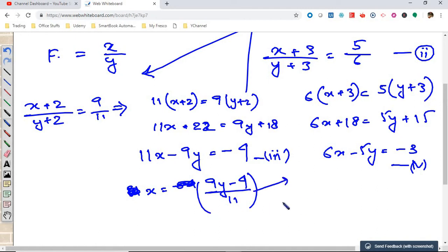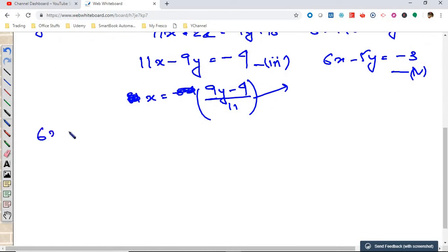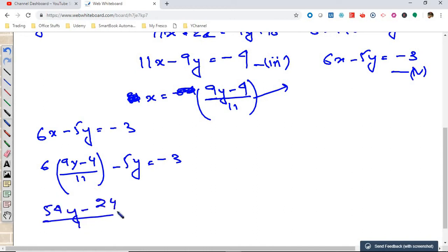Put the value of x. So let me write it down: 6x minus 5y equals minus 3. This becomes 6 times 9y minus 4 by 11 minus 5y equals minus 3. This gives 54y minus 24 by 11 minus 5y equals minus 3.